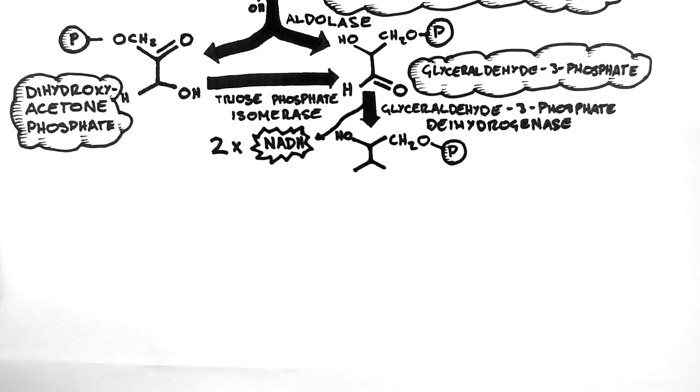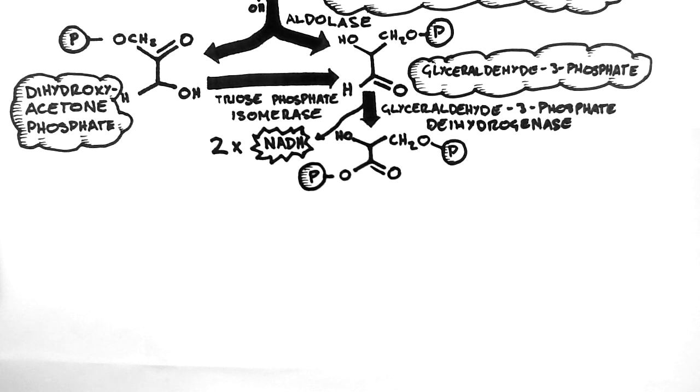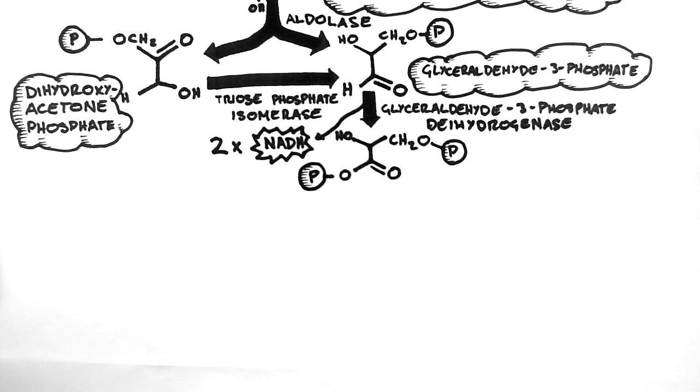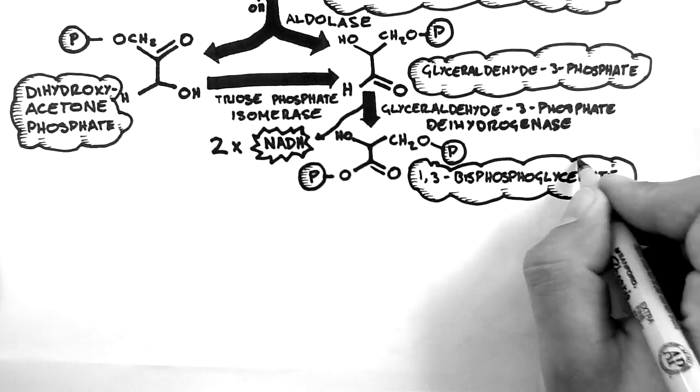The hydride group on the molecule is replaced by a phosphate group supplied from inorganic phosphate, not from ATP. It is the reduction of NAD+ into NADH which provides the energy to bind inorganic phosphate. This gives us the molecule 1,3-bisphosphoglycerate.